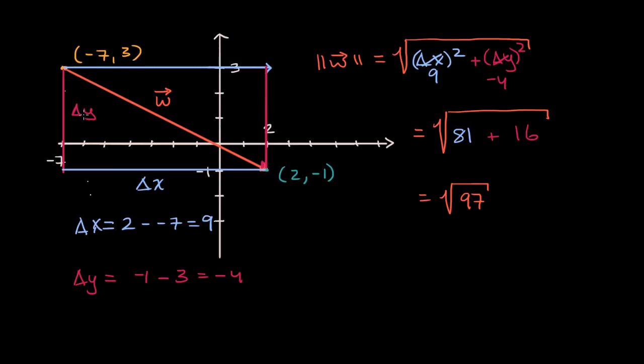And you could immediately see that that y component is the same as our change in y. And the x component is the same thing as our change in x. And so sometimes you will see something like this. The vector w is equal to, and it might look like coordinates, but they're really giving you the components. So the x component is positive nine and the y component is negative four.